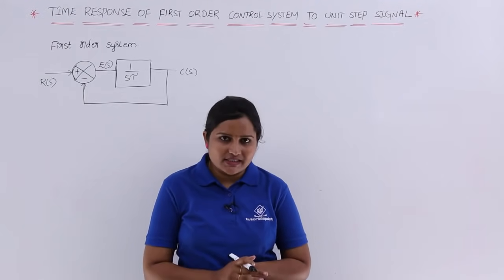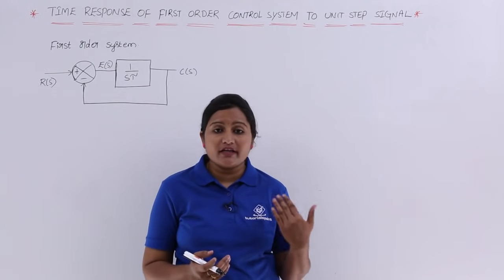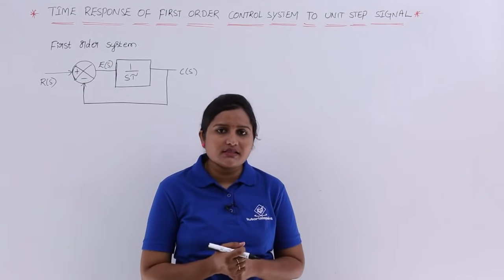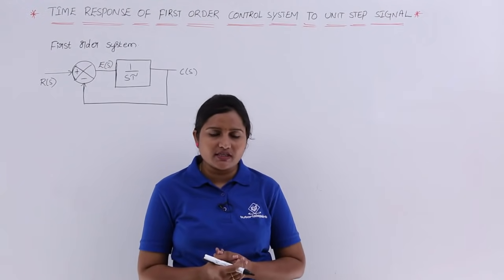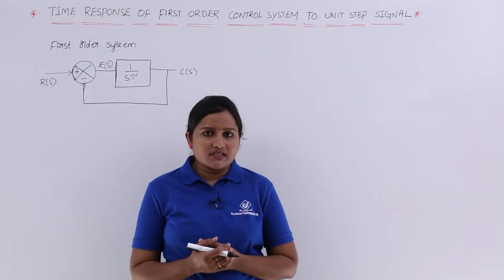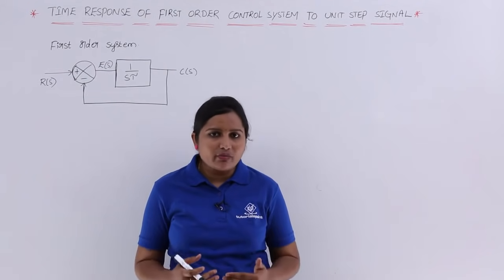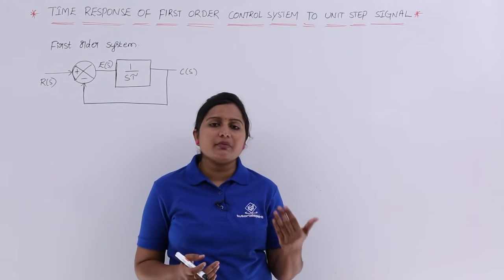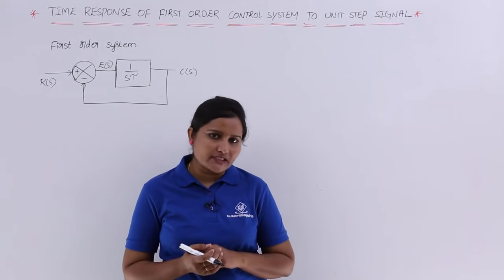In this video, we are going to discuss the time response of a first order control system for a unit step input. We already discussed determining the order of a system. This is a first order system, meaning in the denominator of the transfer function the maximum power of S must be 1. Only then can we say it is a first order transfer function.